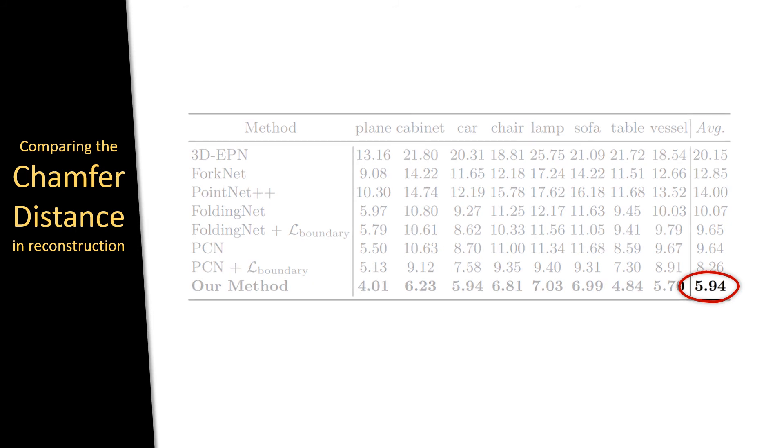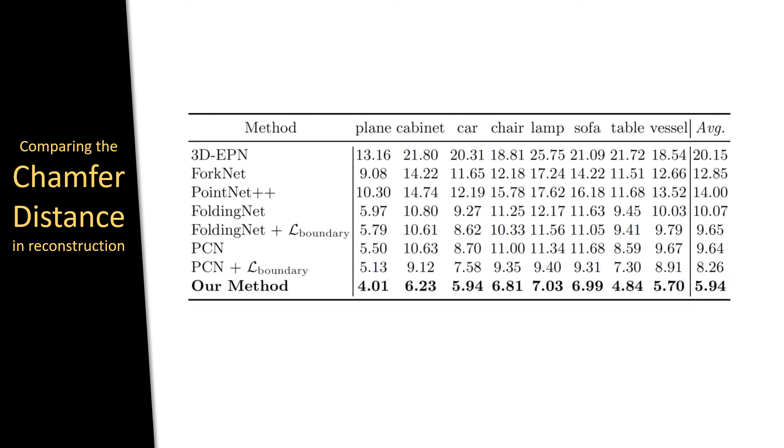Here is another example where we obtain state-of-the-art performance on ShapeNet. Notice that this evaluation includes FoldingNet and PCN with a loss function to avoid overlapping regions, and shows that both methods can take advantage of the proposed loss function. But even so, our method still acquires the best results.